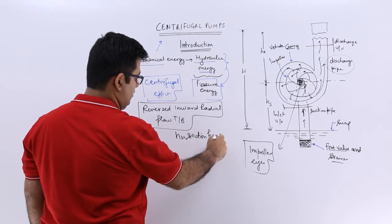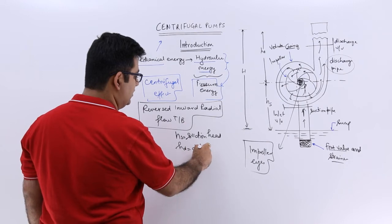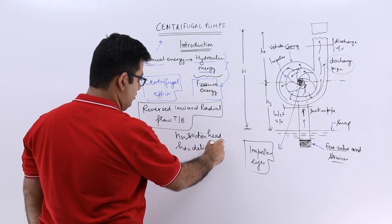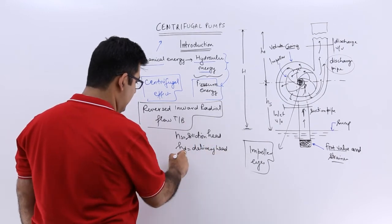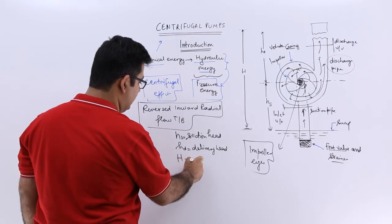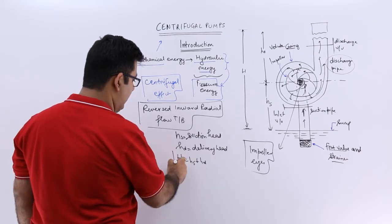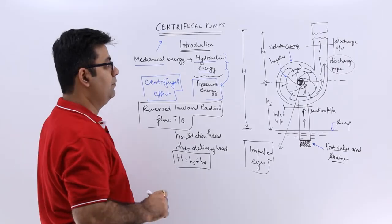So this becomes the suction head, HD becomes the delivery head, and the total head is equal to the suction head plus delivery head.